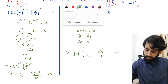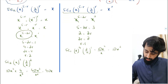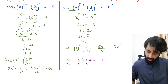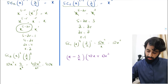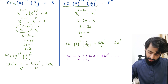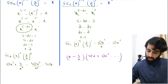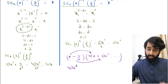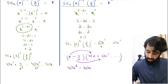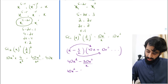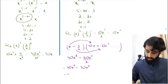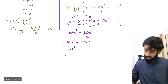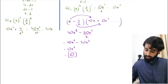Now that everything is sorted out, we're at the home stretch. The expression (x − 3/x) gets multiplied by (40x + 10x³ + …). x multiplied by 40x gives 40x². Then (−3/x) multiplied by 10x³ gives −30x³/x = −30x². So combining: 40x² − 30x² = 10x².